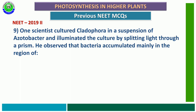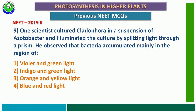Question number 9 from NEET 2019 phase 2: A scientist used Cladophora in a suspension of aerobic bacteria and illuminated the culture by spreading light through a prism. He observed that bacteria accumulated mainly in the region of — violet and green light, indigo and green light, orange and yellow light, or blue and red light. The correct answer is the fourth option — blue and red light. T.W. Engelmann split visible light into seven colors using a prism. Cladophora performed photosynthesis most in blue and red light, releasing oxygen, causing aerobic bacteria to accumulate in those regions.